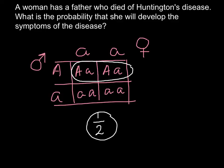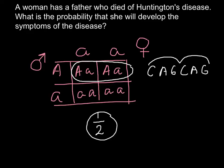I also want to add that this disease is caused by repetition of the trinucleotide CAG, repeated over and over again many times. This also leads to repetition of the amino acids coded by this sequence, and the mechanism by which this mutated protein causes disease is not yet well understood.